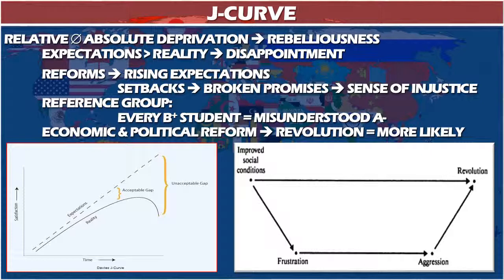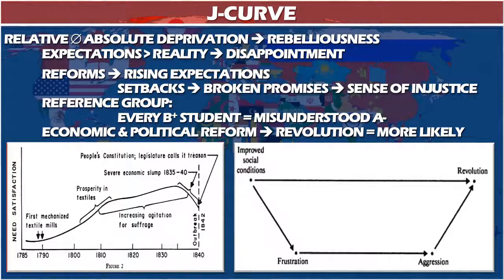Very often it's the reforms that make people better off that can drive revolution, because a traditional government trying to reform raises expectations — promising food, jobs, democratization — and then if there are setbacks, the sense of injustice comes from broken promises. Shown in the lower-left graph is James Davies's work on Dorr's Rebellion in the United States — a rebellion in the 1840s in Rhode Island, driven by industrialization where working-class people lacked political rights, triggered by the worldwide depression of the late 1830s during Martin Van Buren's presidency.